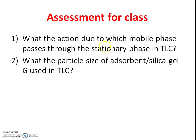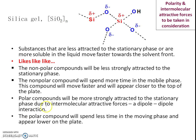First assessment question: what action causes the mobile phase to pass through the stationary phase in TLC? Second question: what is the particle size of the adsorbent used in TLC? Now, looking at the structure of silica gel — it is a silicic acid — and on its outer surface are hydroxy functional groups which form intermolecular attractive forces with the compounds to be separated. Diol interactions are also taken into consideration.